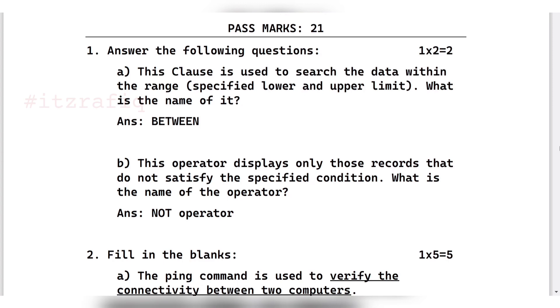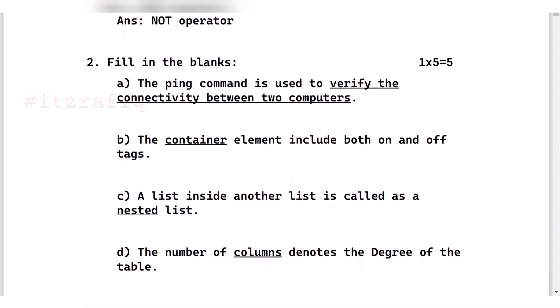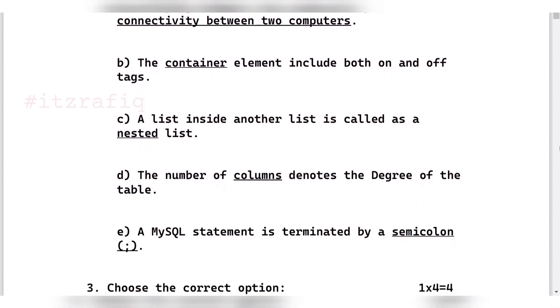After that, fill in the blanks are directly given from the book, so those in touch with the book will definitely know the answers. The ping command is used to verify connectivity between two computers. Container elements include both on and off tags. A list inside another list is called a nested list. The number of columns denotes the degree of a table. MySQL statement is terminated by a semicolon.